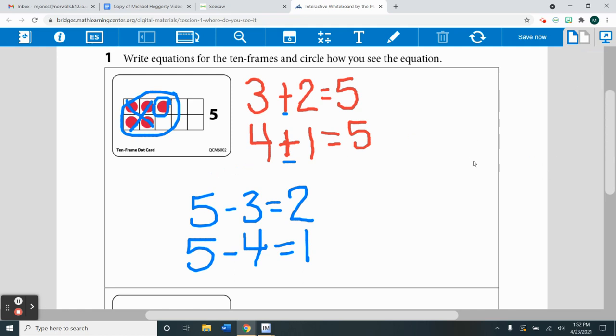That's all you are doing for today, is you are taking the amount that is in your 10s frame and writing as many equations as you can see from the 10s frame. And then it wants you to circle one of your equations of how you see it.